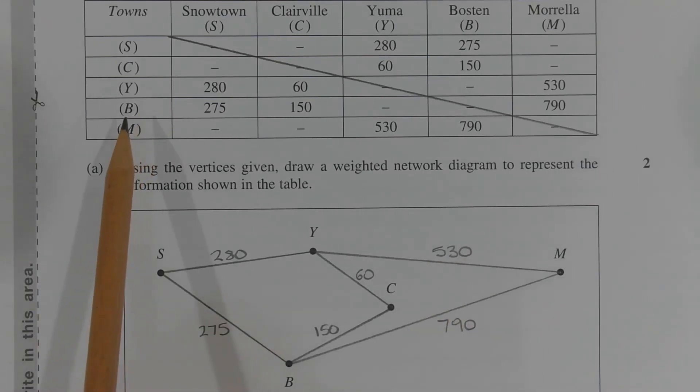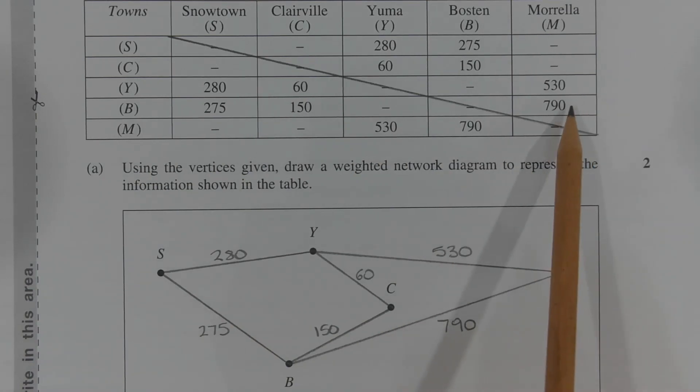Looking at the fourth row and looking at the cells that are above the diagonal, we can see that town B is connected to town M and the distance between those two towns is 790 kilometers. And that is indicated by drawing an edge between vertex B and vertex M and writing 790 next to that edge, which indicates the distance between town B and town M.